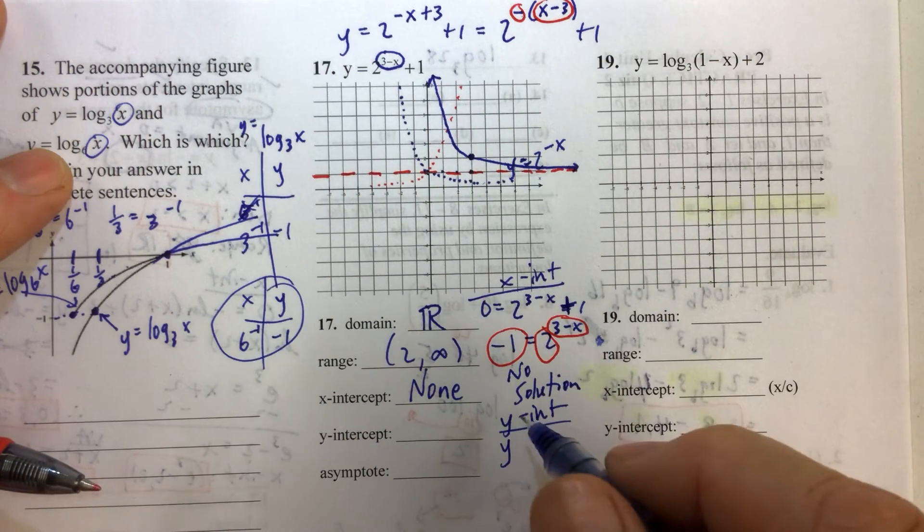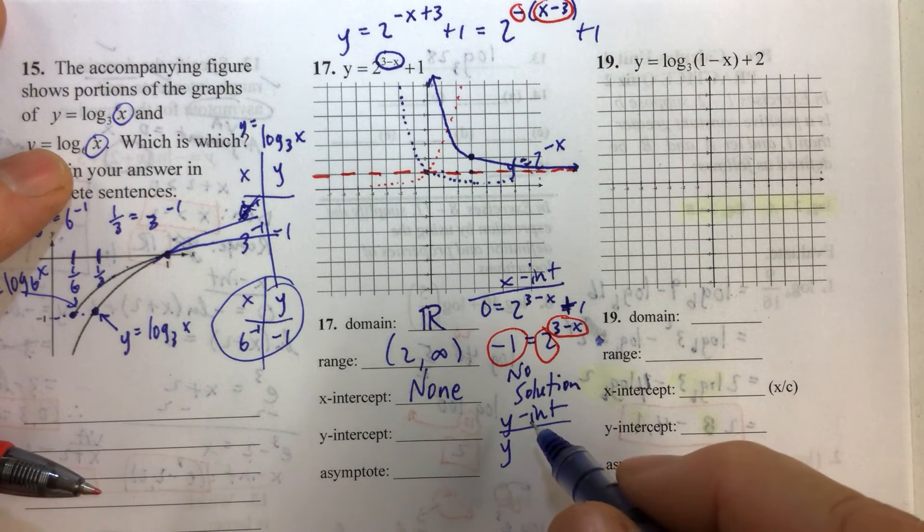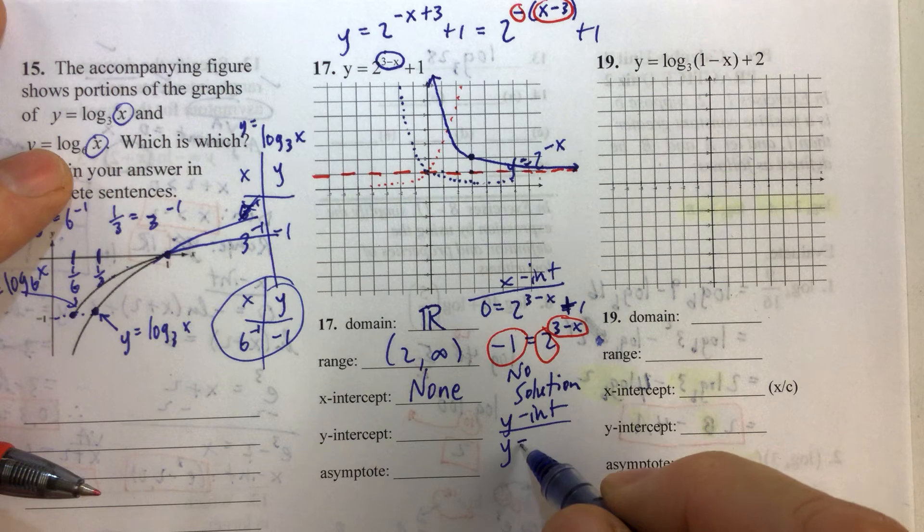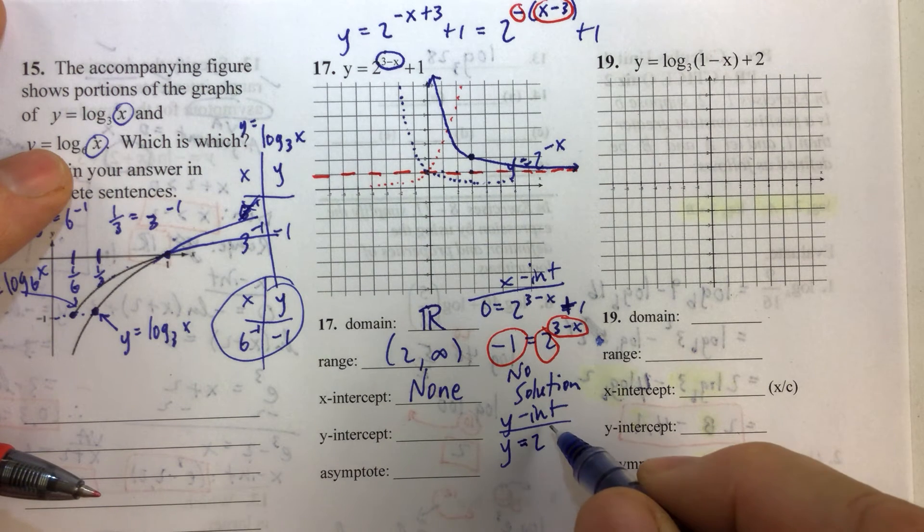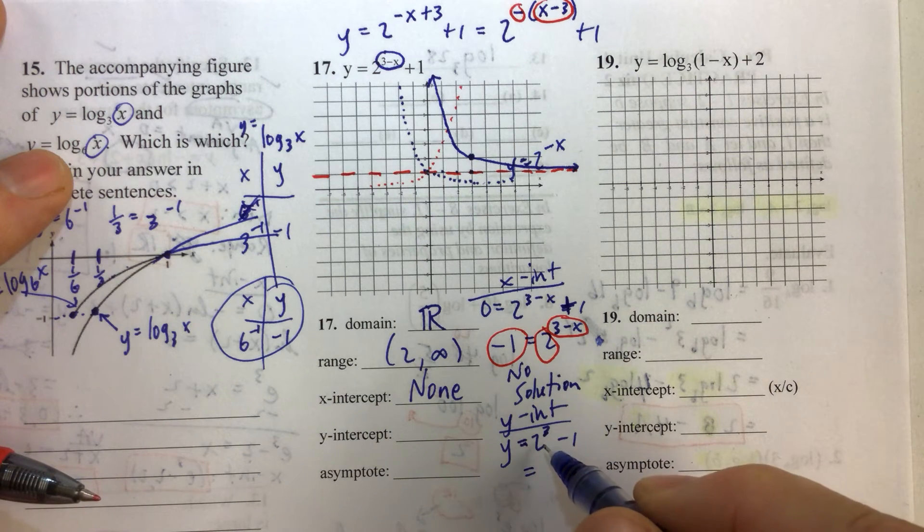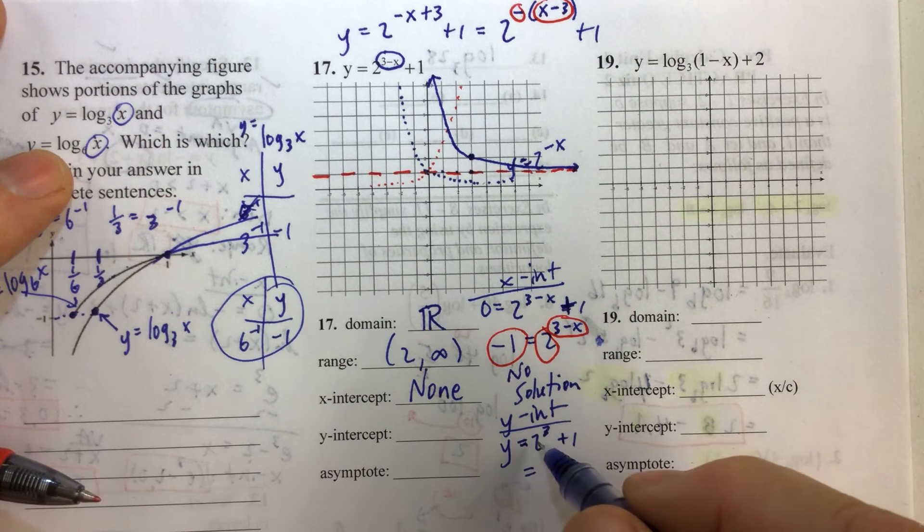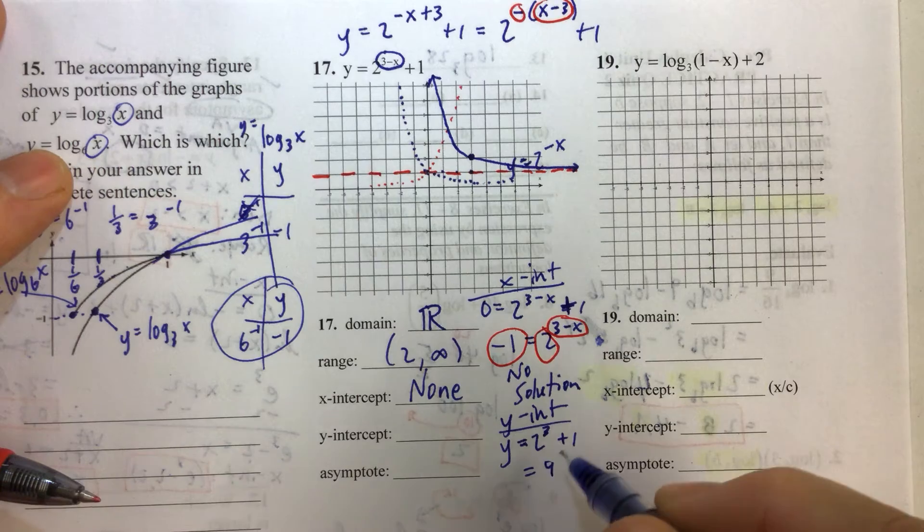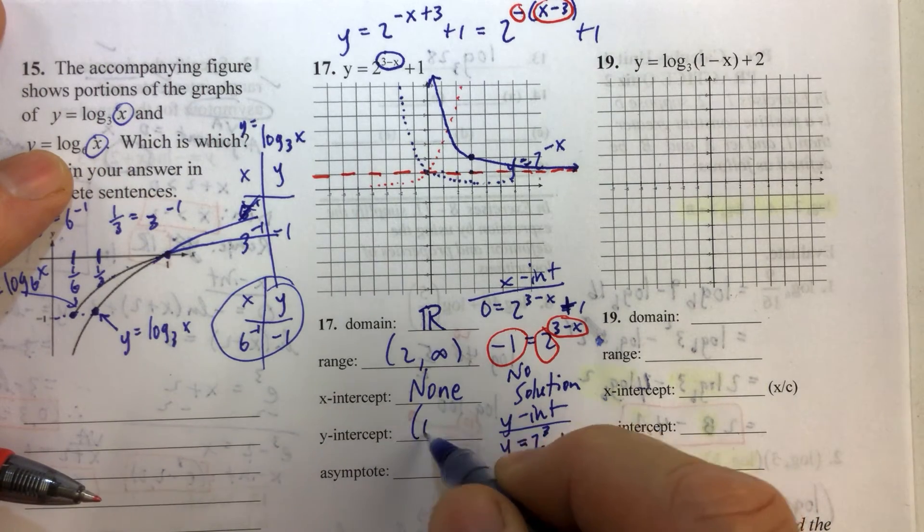We have y equals 2 to the 3 minus 0, which is 2 to the 3rd, plus 1. Well, 2 to the 3rd is 8, plus 1 is 9. So our y-intercept then is (0, 9). That is consistent with the way our graph looks, like it's going to go through (0, 9).